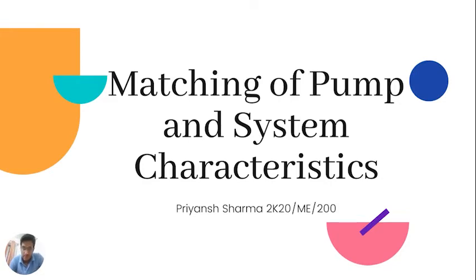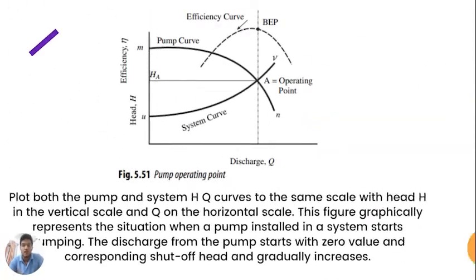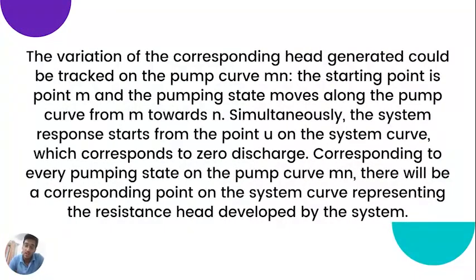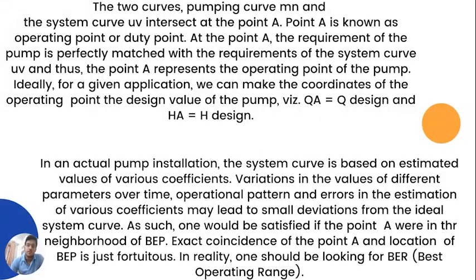My name is Priyan Sharma and my roll number is 2K20ME200. My topic is matching of pump and system characteristics. We need to plot the system and pump curve on a graph with x-axis representing discharge Q and y-axis representing head H. The figure represents the situation where the pump installed in a system just starts to pump discharge from zero. The variation in head can be noted by observing curve MN. There will be a point A where curve MN and curve UV intersect — this point is also known as the operating point of the pump. A pump should be selected such that its best efficiency point (BEP) coincides with point A for achieving the ideal operating case.